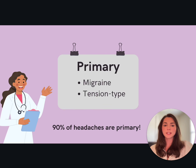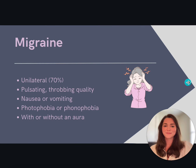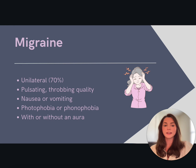Today we are going to focus on the two most common primary headaches: migraine and tension type. Migraines are the most commonly seen in the outpatient setting. Migraines are most often characterized by a unilateral presentation, although they can present bilaterally, with a pulsating, throbbing quality that is moderate to severe in intensity. It can be associated with nausea, vomiting, photophobia, or phonophobia, and may be worsened with physical activity.